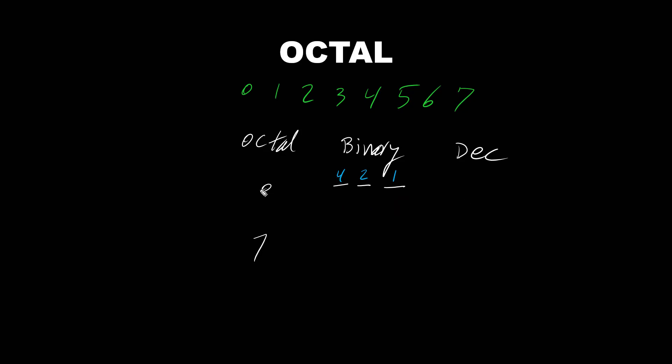For octal number of 0, we have binary of 0, 0, 0, and decimal is 0. Octal number of 7, we have all the three bits being turned on. Why? Because 4 plus 2, 6 plus 1, 7. And 1 means on. So decimal value is 7.